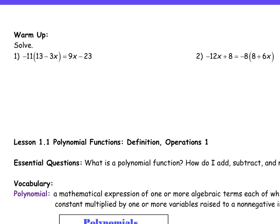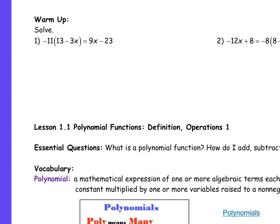Right, first one, maybe I can get the first one. Negative 143 plus 33x equals 9x minus 23. Subtract 9x, add 143. 24x equals 120, so x equals 5. Right there.